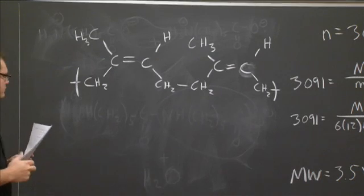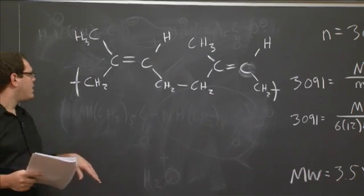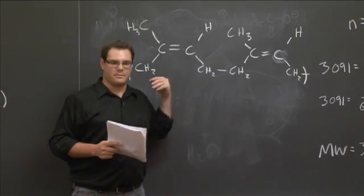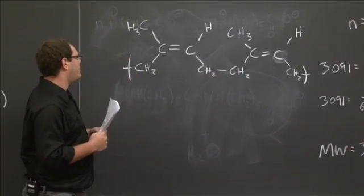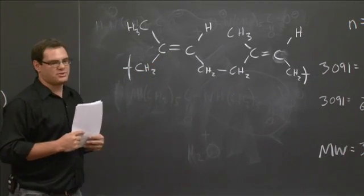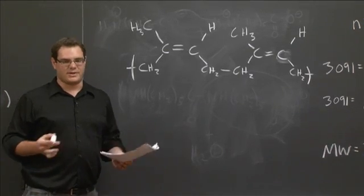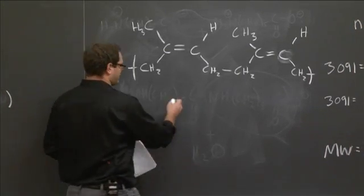You should be familiar with this notation by now. We have the symbol which denotes that it repeats. And we have our double bonds, we have our carbons and hydrogens. This is polyisoprene. And this is what we're going to add sulfur to, to vulcanize rubber. We're going to create vulcanized rubber.